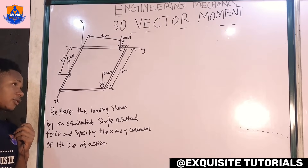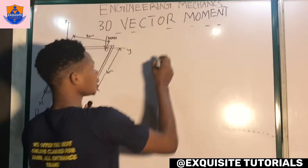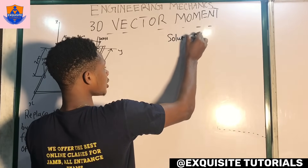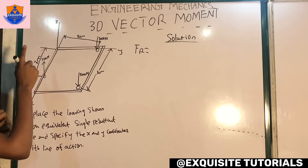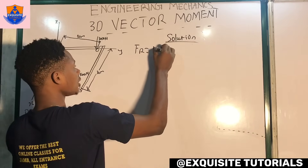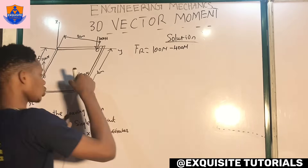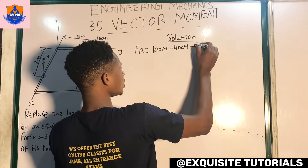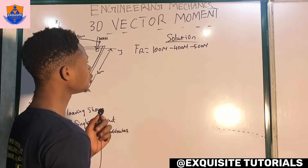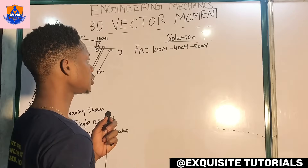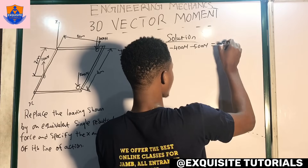To find the resultant force, some forces are acting upward and some are acting downward. The 100 newton force is acting upward — that's positive. The 400 newton force is going down — minus 400 newtons. The 500 newton force is also going down — minus 500 newtons. So minus 400 plus minus 500 is minus 900, and 100 minus 900 gives a total of minus 800 newtons.